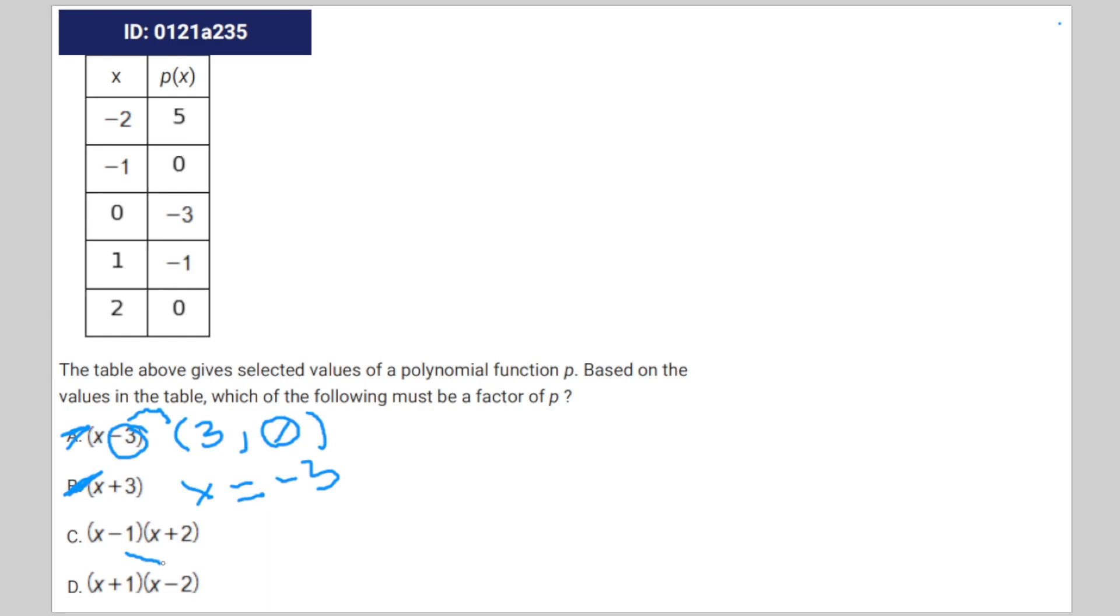There is x equals 1 on the table, but the y value doesn't equal 0. In this situation, it equals negative 1. Therefore, it can't be C.